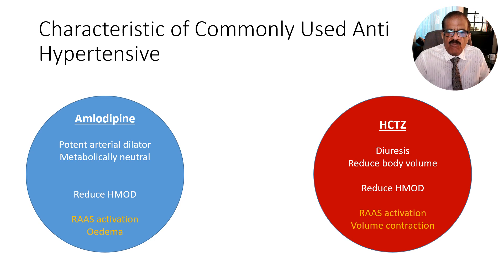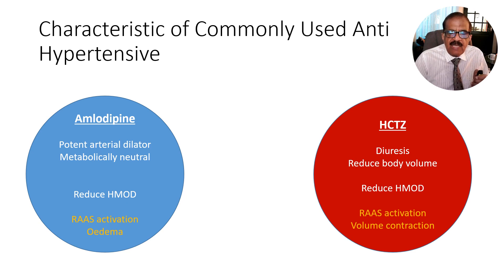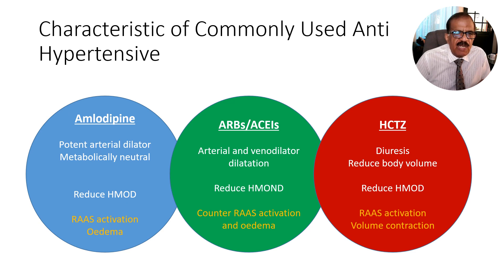Thiazide-type diuretics like hydrochlorothiazide cause a very gentle 24-hour uniform diuresis, have good blood pressure-lowering effect by reducing body volume, and are proven to reduce hypertension-mediated organ damage. They have been in use for a very long time and were initially the preferred first-line agents because of proven efficacy and low cost. However, today we consider diuretics as one of the options rather than necessarily the first-line agent. They also activate RAS because they reduce sodium and water, triggering RAS activation.